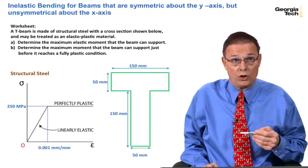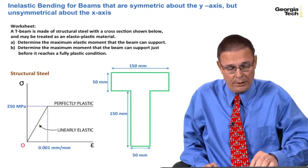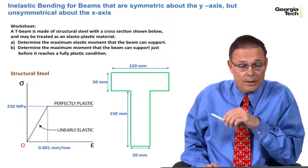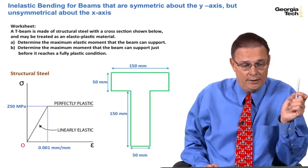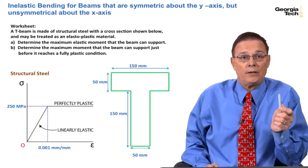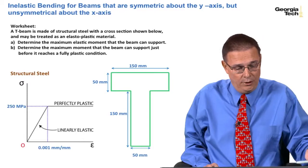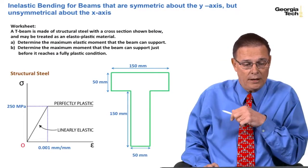And so here's our worksheet. We have a T beam, so it's going to be unsymmetrical about the plane of bending, or the axis of bending. And it's made of structural steel, which is a mild steel, and it models well as an elastic, perfectly elastic plastic material, and so we're going to use this as our stress-strain diagram.